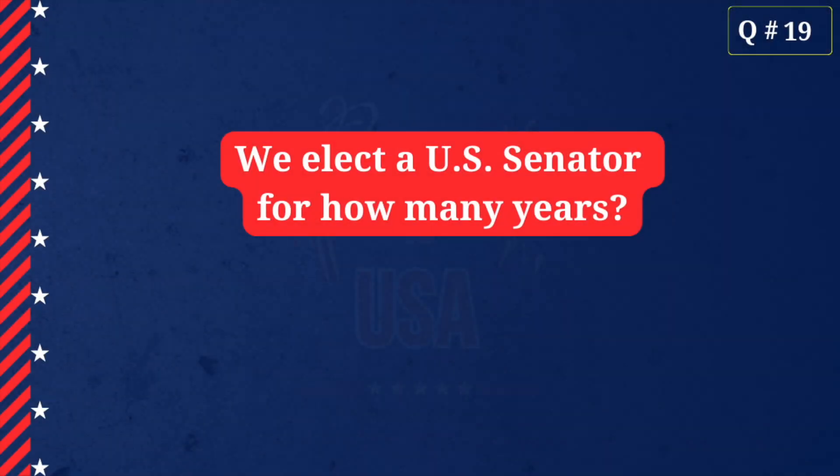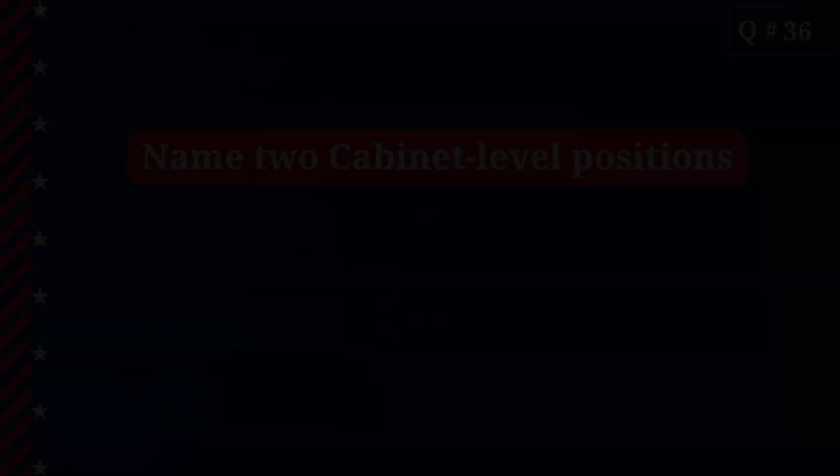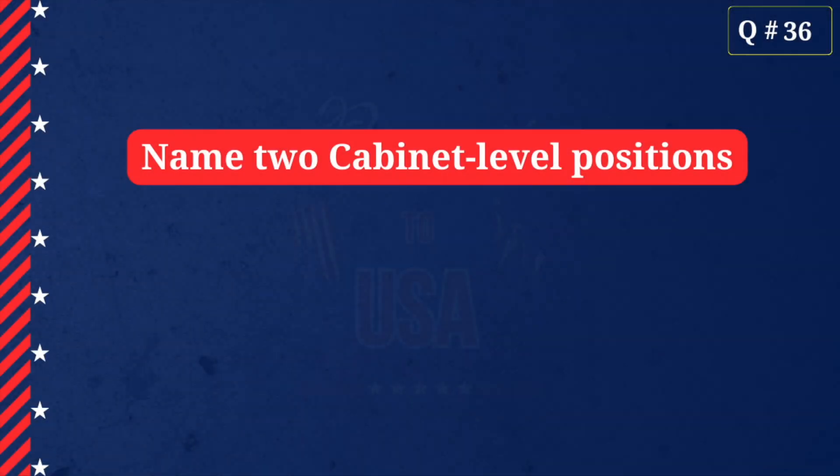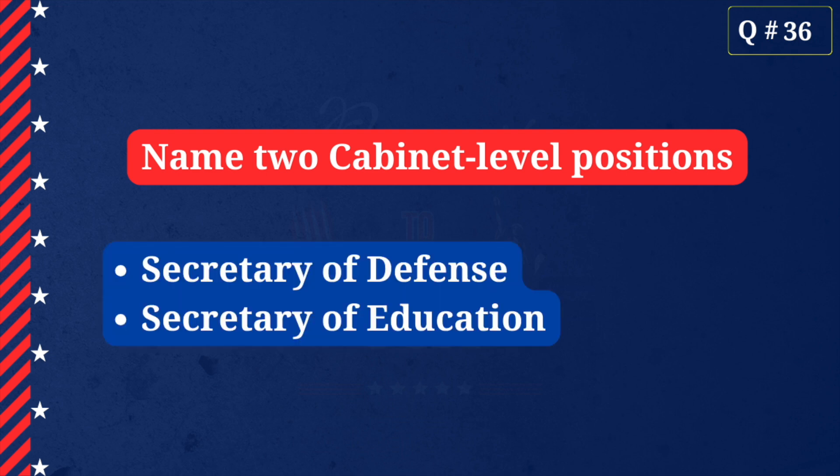We elect a U.S. senator for how many years? Six. Name two cabinet-level positions. Secretary of Defense, Secretary of Education.